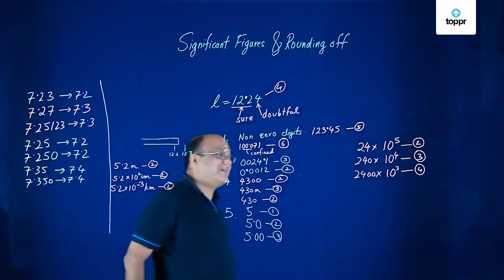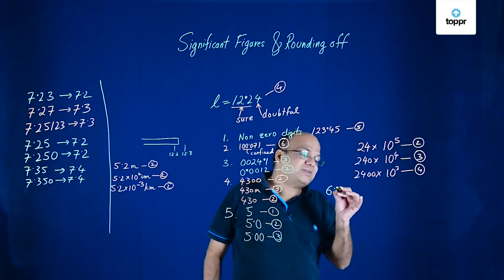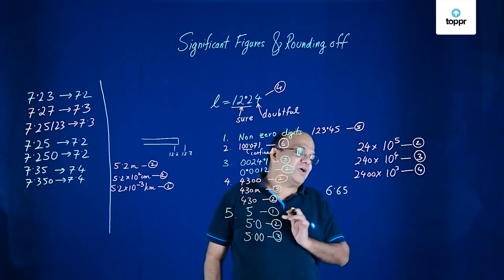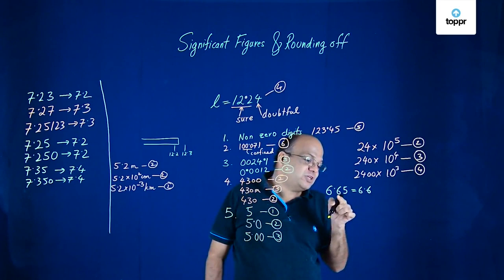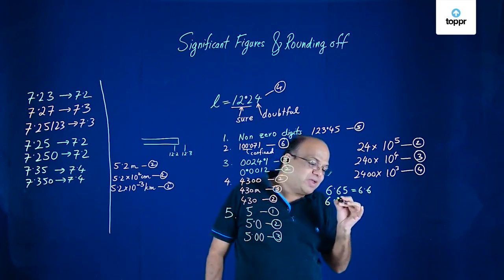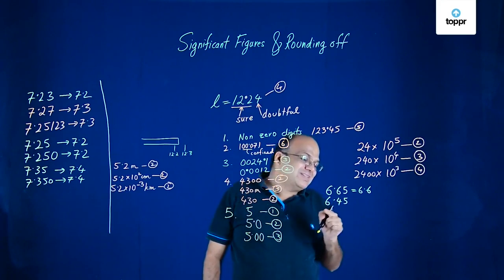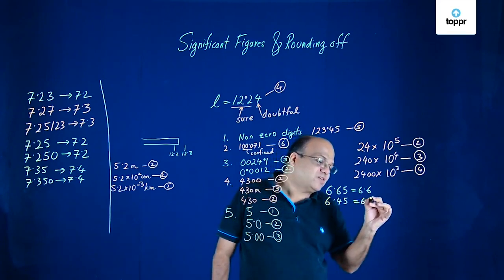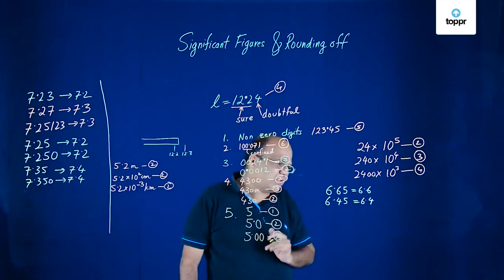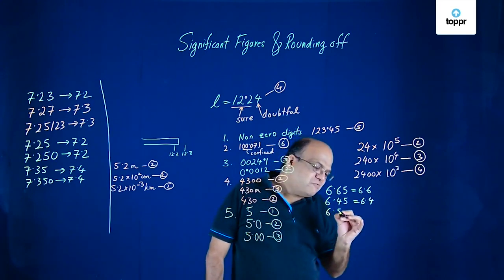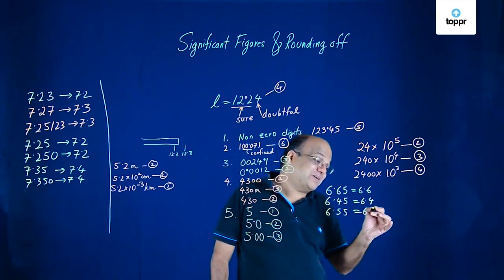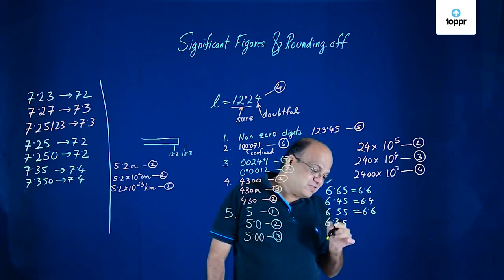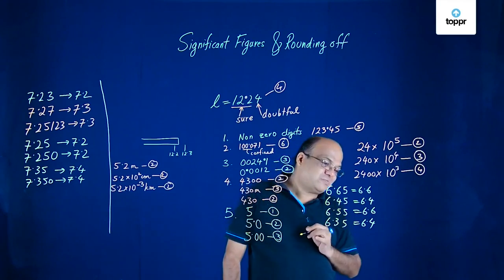Suppose you have 6.65 and you want to round off to 1 decimal place — this will be 6.6. Don't change it because 6 is even. For 6.45, the digit you are dropping is 5, and 4 is even, so this gives you 6.4. After this, zeros can be there — the same rule is applicable. If it is 6.55, you are dropping 5 and 5 is odd, so increase it by 1. Similarly, 6.35 — 3 is odd, increase it by 1, giving 6.4.